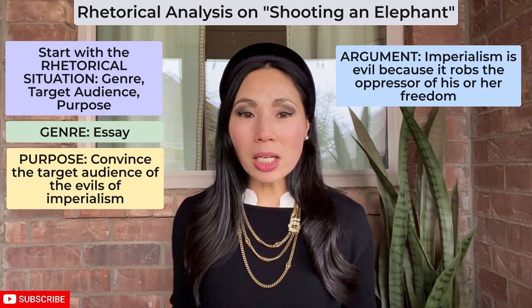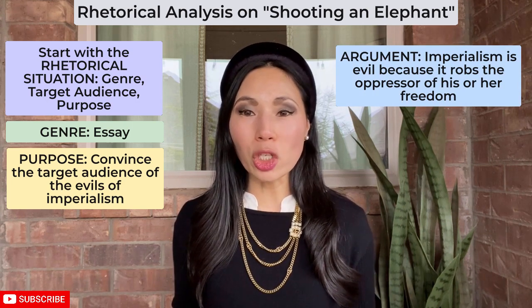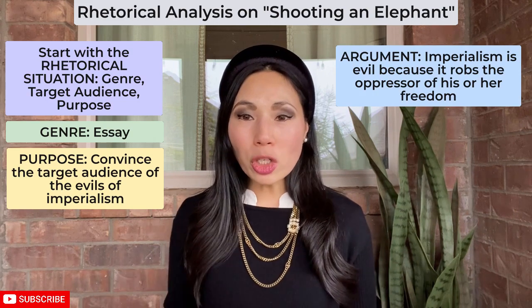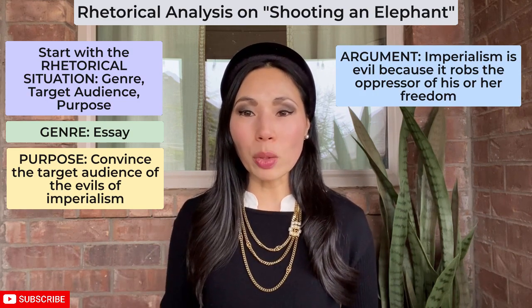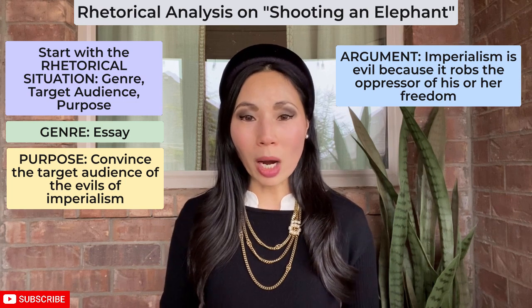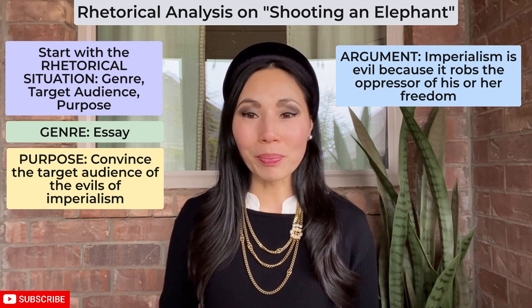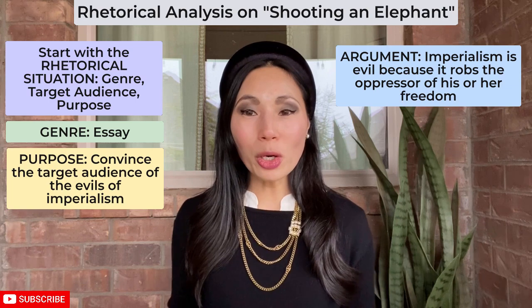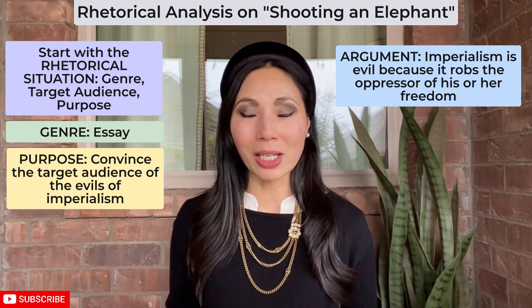In the text, the narrator uses the rhetorical device irony to argue that imperialism is evil, not just because of the injustices it creates for the oppressed, but because it also robs the oppressor of his own freedom. But exactly whom is he addressing? Well, there are a few clues that make it clear who the target audience is.